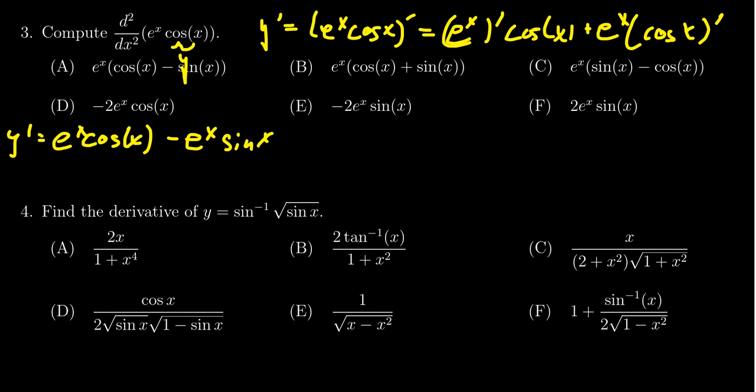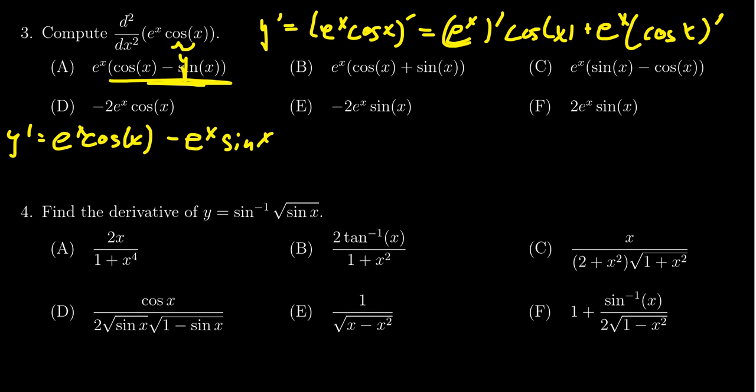Now, I want you to watch out here. That's going to be tempting because choice number A is the first derivative. This is equal to y prime. That is a distractor. We need to look for the second derivative.